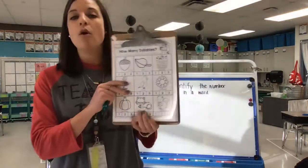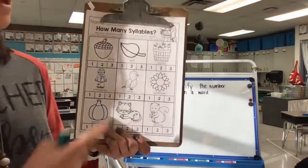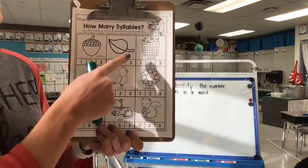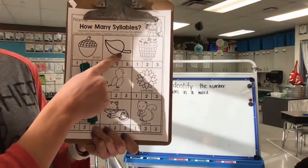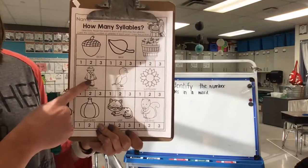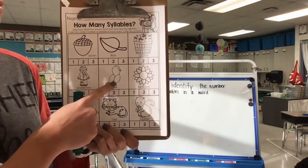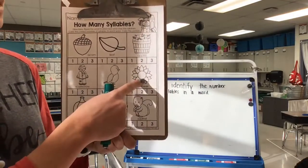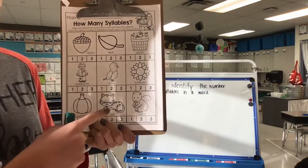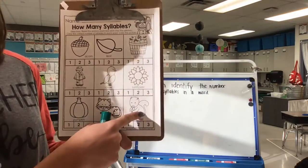So let's go over what pictures we have. Ready? There's acorn, leaf, apples, scarecrow, sunflower, pumpkin, cat, squirrel.